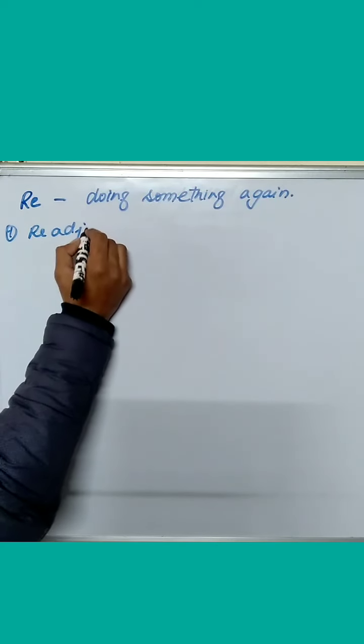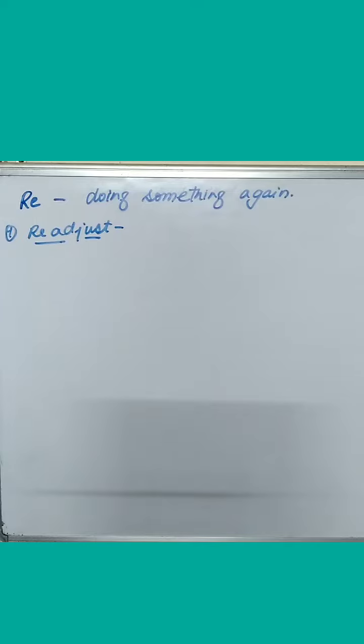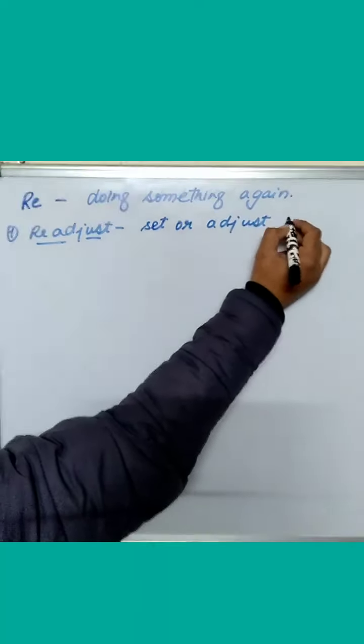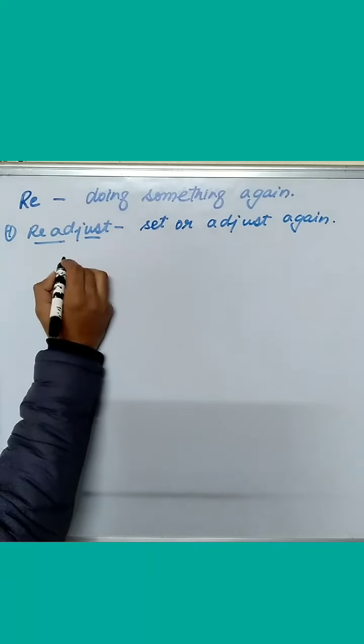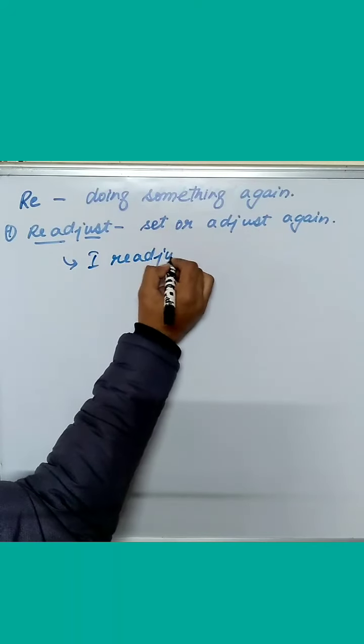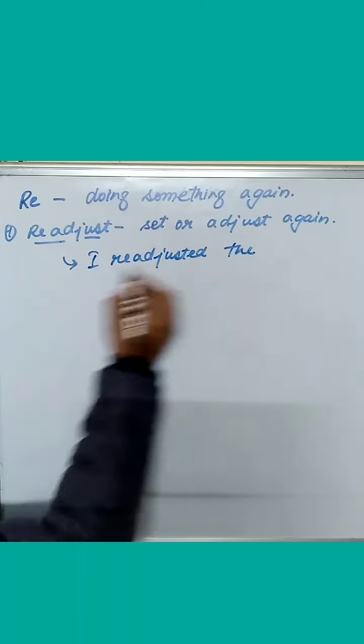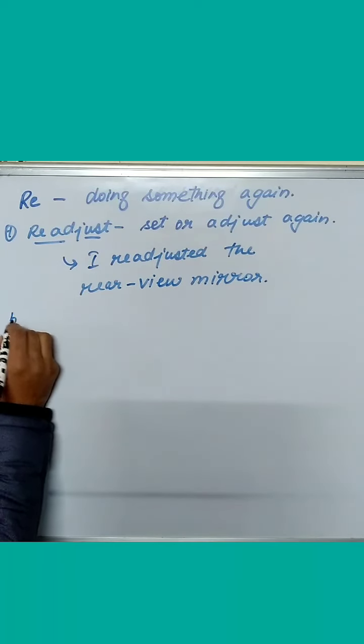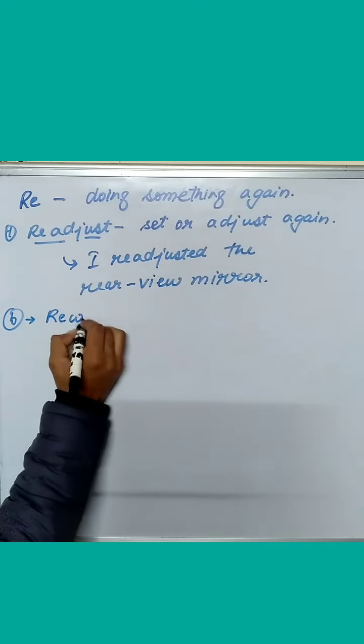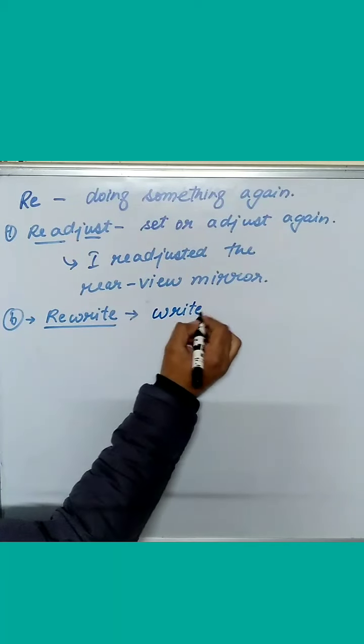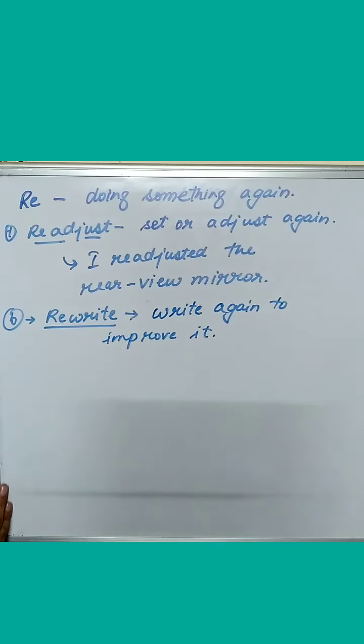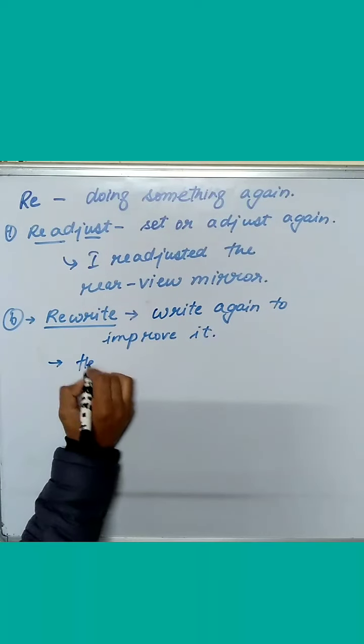Now the prefix that we have is 're'. The meaning of 're' is doing something again. For example, readjust, its meaning is setting something or adjusting something again. In the sentence, I readjusted the rear view mirror.